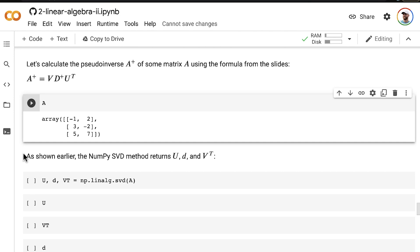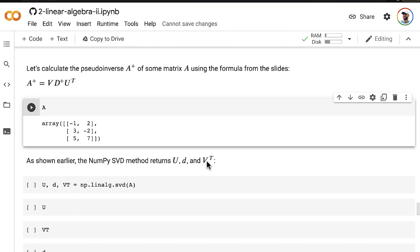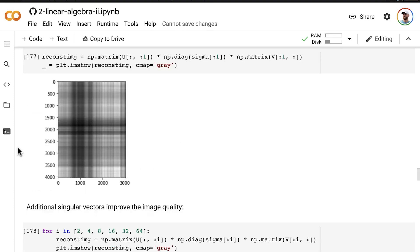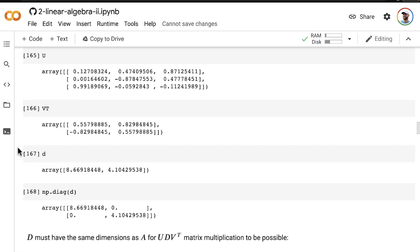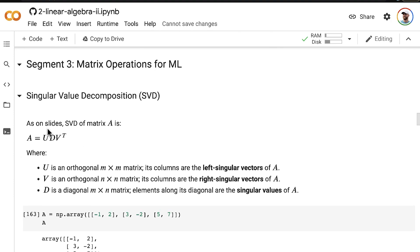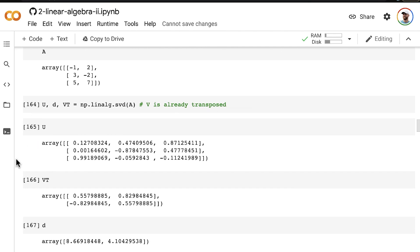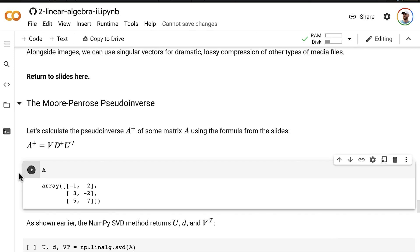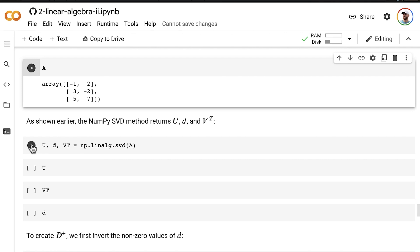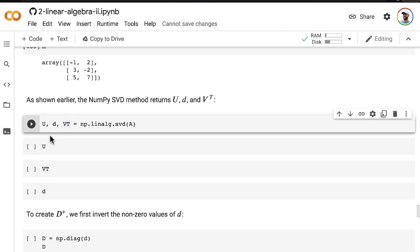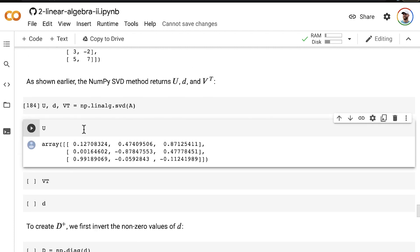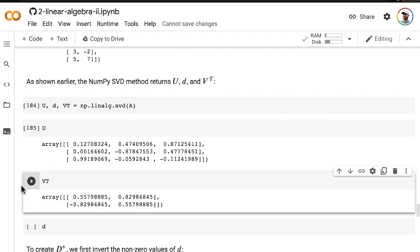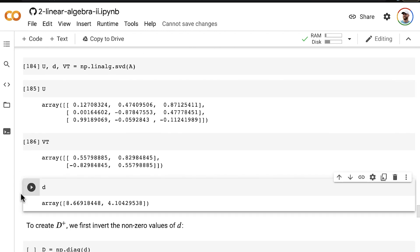As shown earlier, the NumPy singular value decomposition method returns U, D, and V transpose. We have already been working with that earlier in this notebook. In this section here, we are using the SVD method to calculate U, D, and V transpose. So, we're going to use those to calculate the pseudo-inverse now. Here's U, which is the left singular vectors of our matrix A. And then we have V transpose, which is the right singular vectors of A. And D, which is our singular values for A.